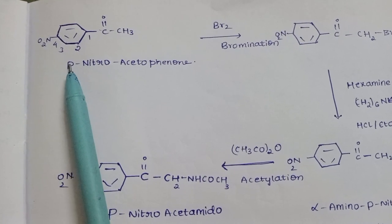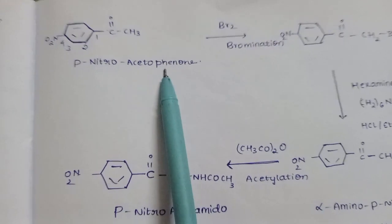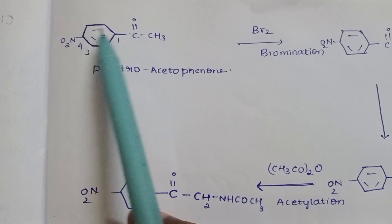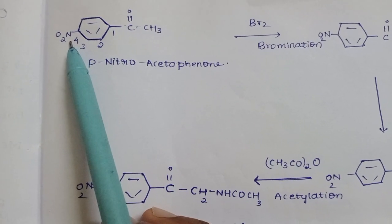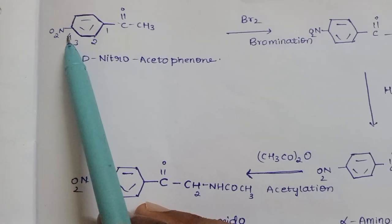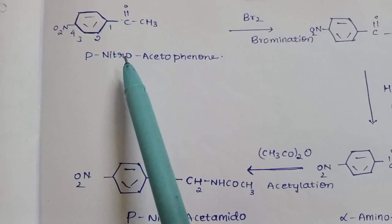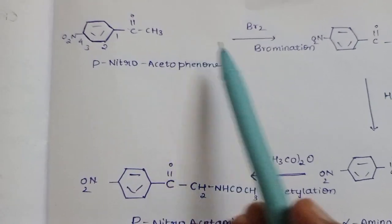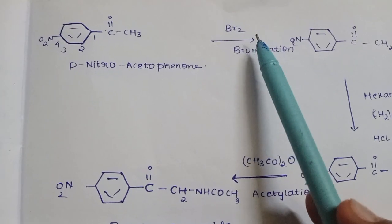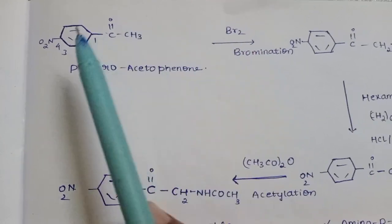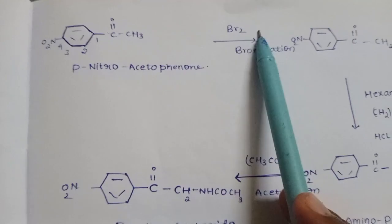We start with p-nitro acetophenone. Benzene is placed with nitro and O2 at the fourth position. Next, we do bromination of this compound with Br2, where hydrogen is lost and replaced by Br.